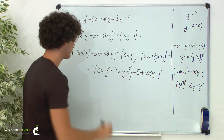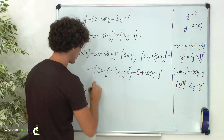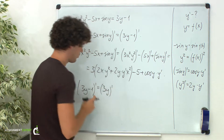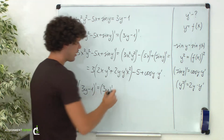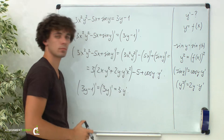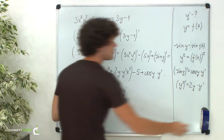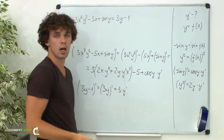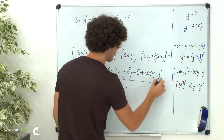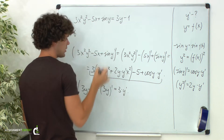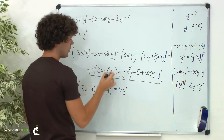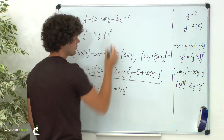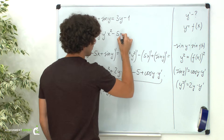Now the right part: the derivative of 3y minus 1. The derivative of 1 is a constant so its derivative is 0. The derivative of 3y gives us 3 times y prime. Now let's rewrite our equality. On the left, opening the braces, we have 6x times y squared plus 6y times y prime times x squared minus 5 plus cosine of y times y prime.